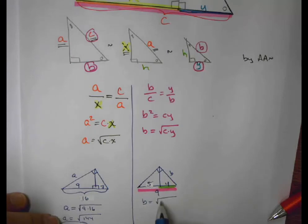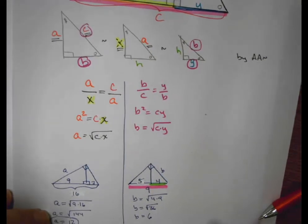Therefore, B is equal to the square root of 4 times 9. B is equal to the square root of 36. So B would be equal to 6 units in length.